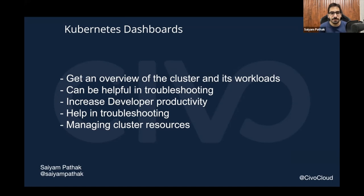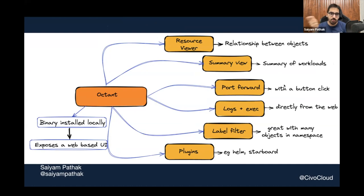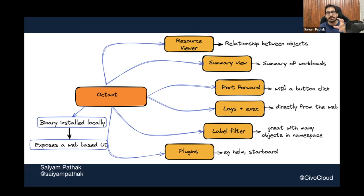The first tool I want to talk about is Octant. Octant is a client-side Kubernetes dashboard — it's a binary you download that immediately exposes a web-based UI locally. One interesting feature is the relationship viewer for objects, which no other tool shows as smoothly. It also has a resource viewer.